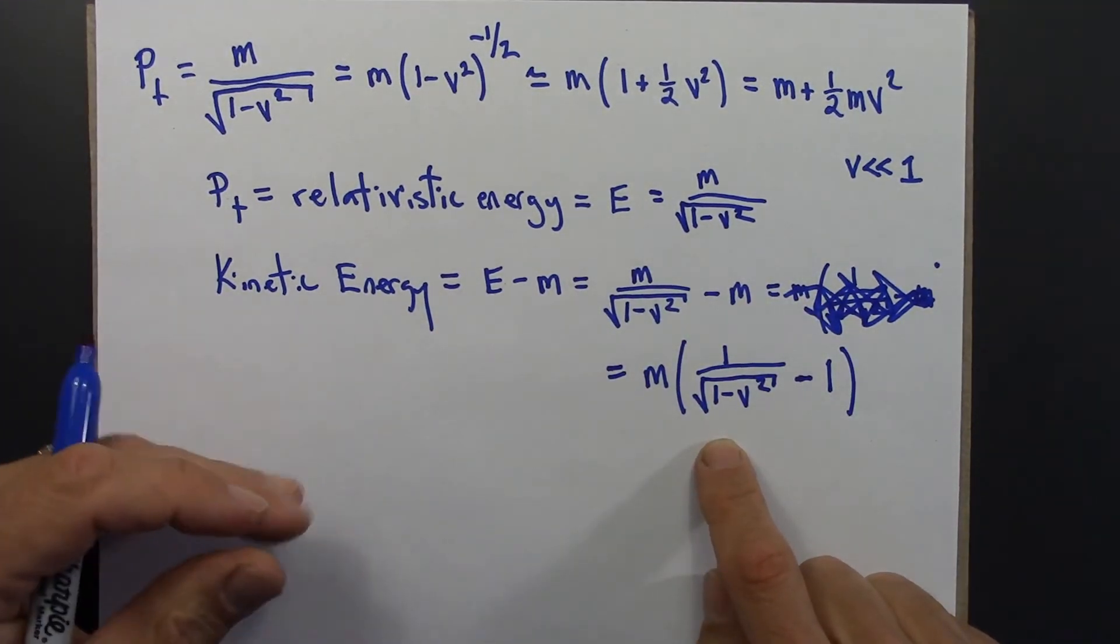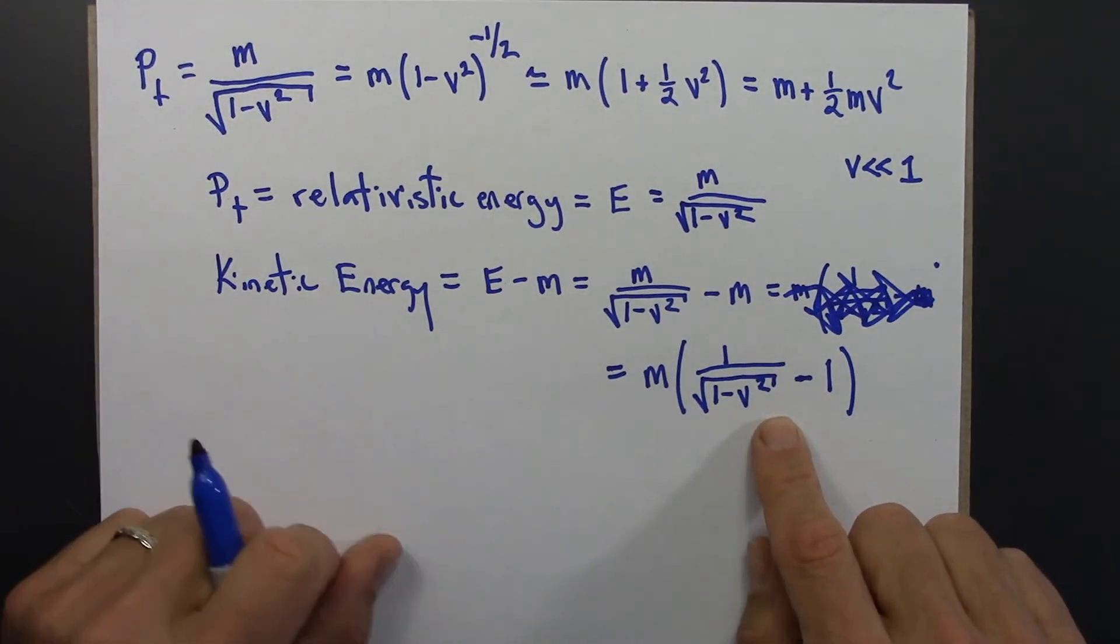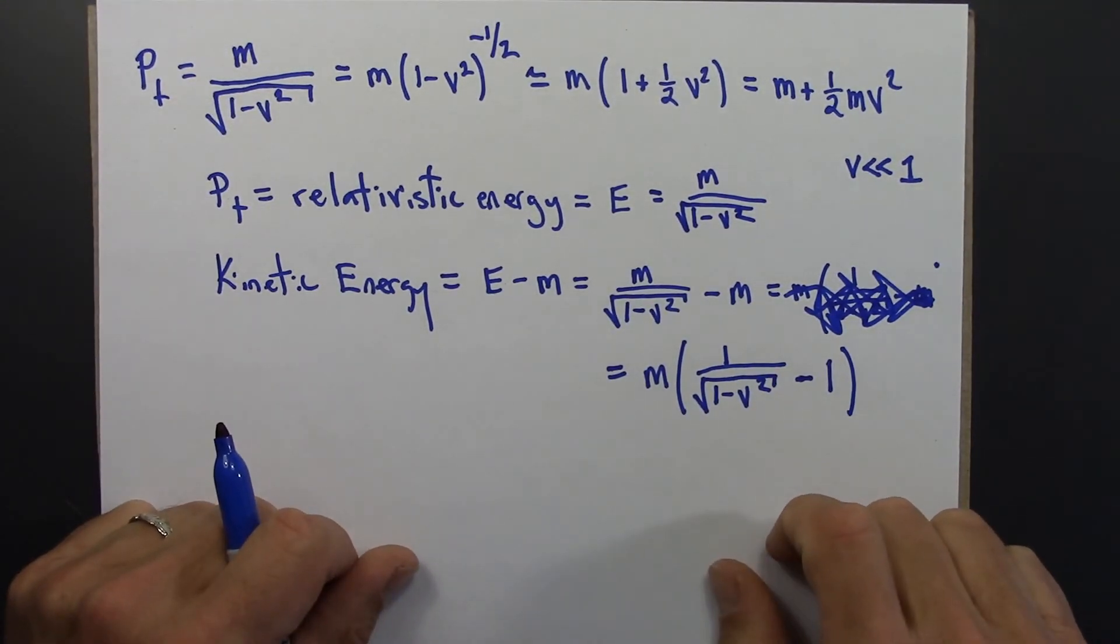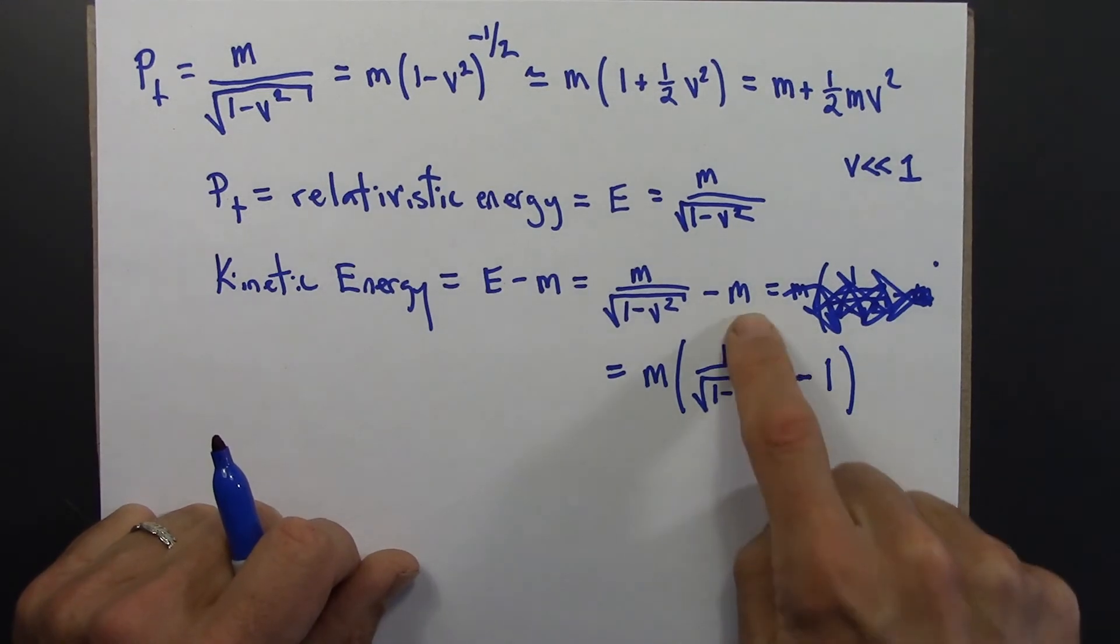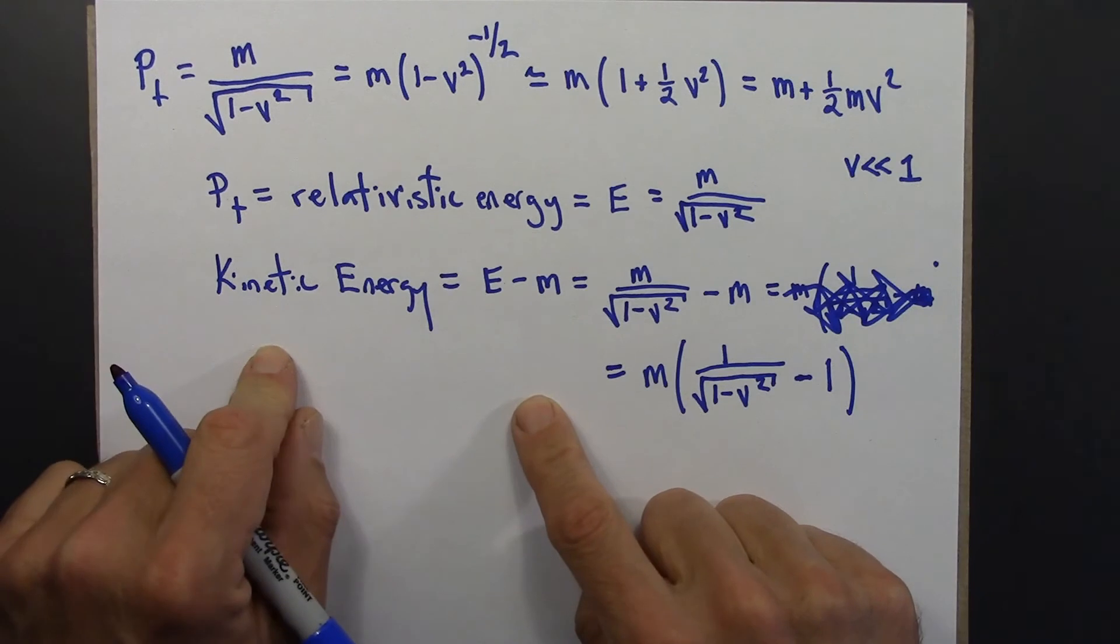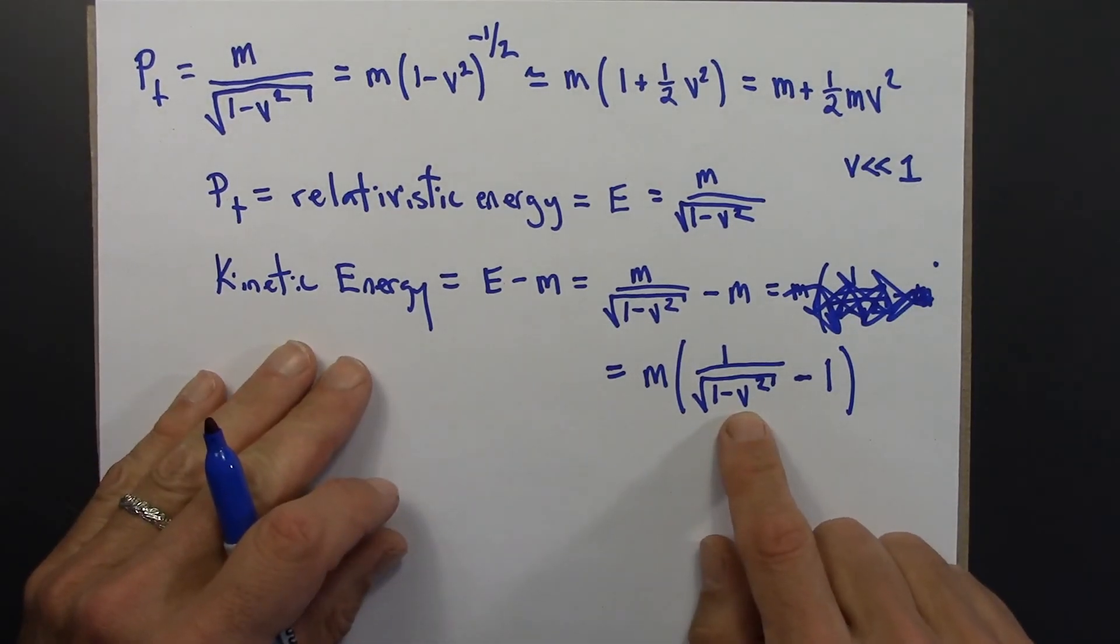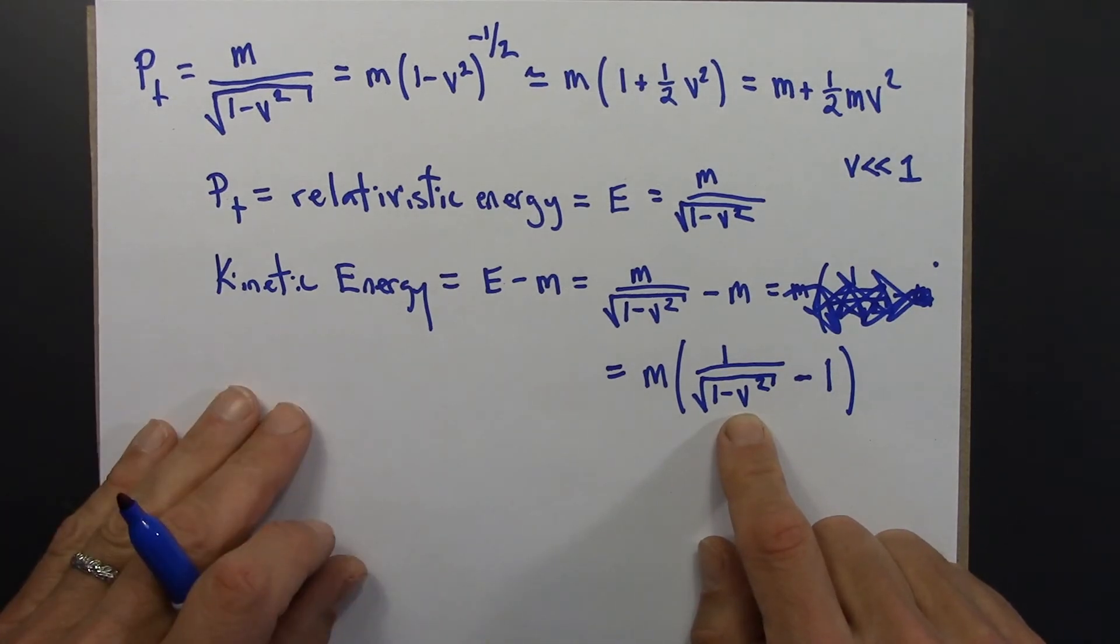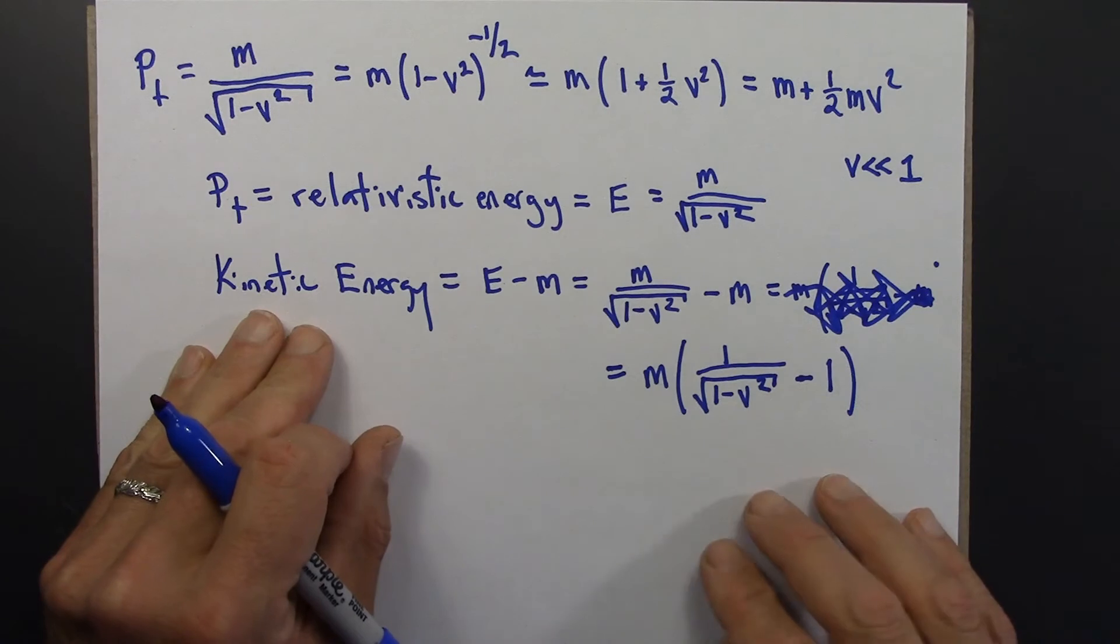And the reason I wrote it this way, I guess I could have written it that way also. But this makes the following clear. Suppose the object is at rest. It's not moving. Then v is 0. Square root of 1 is 1. 1 over 1 is 1. 1 minus 1 is 0. And so the kinetic energy is 0. So that makes sense. If the speed of the object is 0, it has no kinetic energy. Again, kinetic energy is the energy associated with motion.